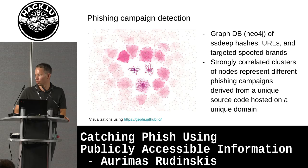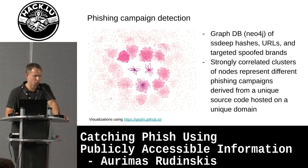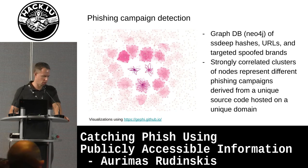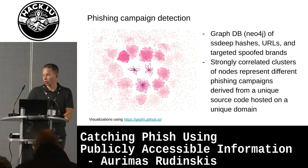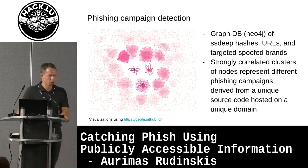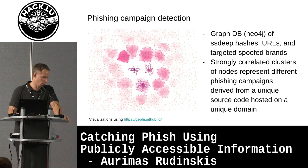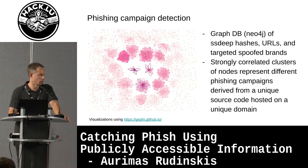Storing information such as SSDEEP hashes, phishing URLs, and brands in a graph database like Neo4j allows you to detect correlations between domains and identify phishing campaigns. This is also pretty useful to find the bigger groups which mimic or spoof your domain. For visualizations, the open source tool Gephi can be used and it provides quite useful information.